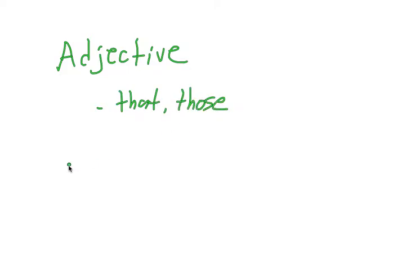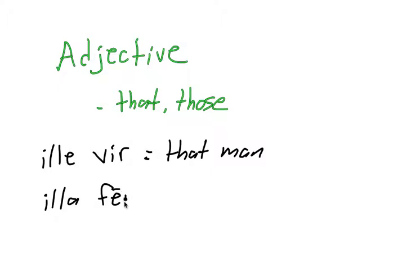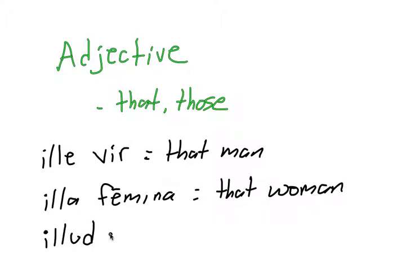These are how ille, illa, illud is used as a pronoun. And then as an adjective, it means that or those. So ille vir would mean that man. Illa femina, that woman. And illud templum would be that temple.